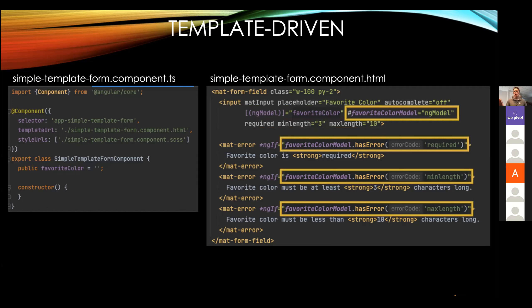I am creating a variable called favorite color model and telling Angular I want this to be the ngModel, so I can reference it in my error section below. I'm simply doing a check to say: does this input have an error called required? And if it has the required error, it's going to provide the error message to the user stating that they missed a required field.